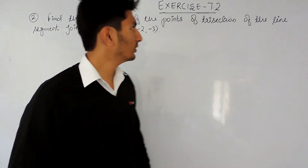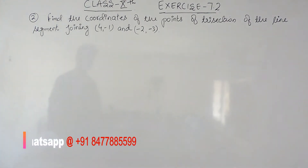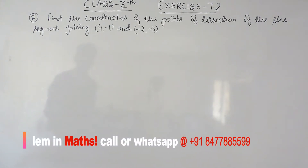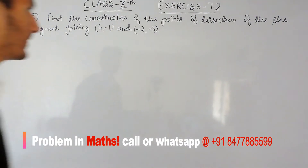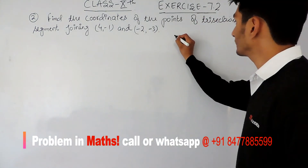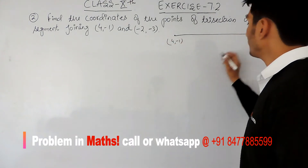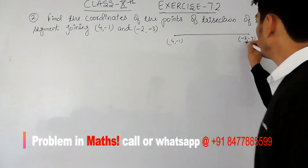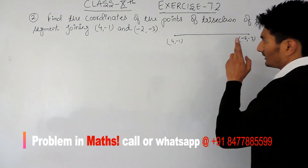Hello everyone. In this video we are going to solve question number 2 of Exercise 7.2. The question says we have to find the coordinates of the points of trisection of the line segment joining (4, -1) and (-2, -3). So here we are given two points and we have to find the coordinates of the points of trisection, which means we have to divide this line into three equal parts.